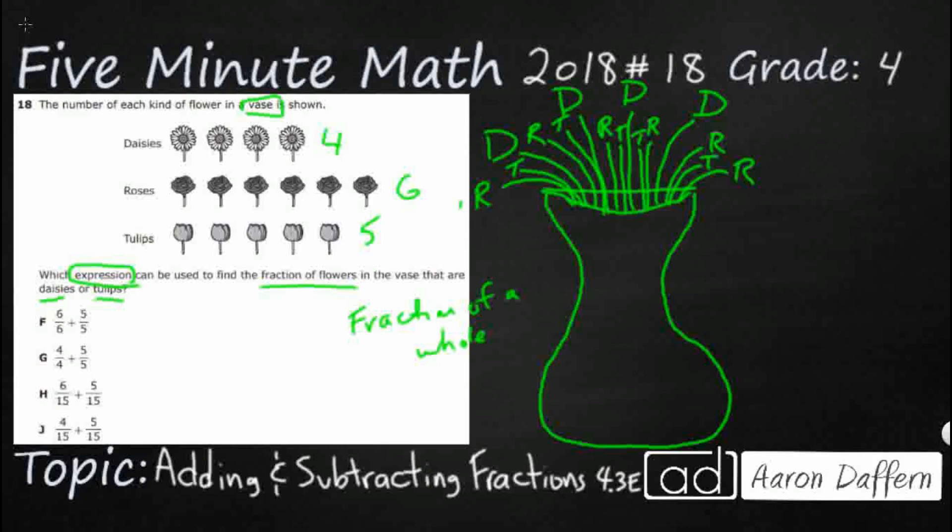So I've got one, two, three, four, five, six, seven, eight, nine, 10, 11, 12, 13, 14, 15. You also could just add four and six and five. But either way, your whole is going to be 15. So you've got 15 total flowers.